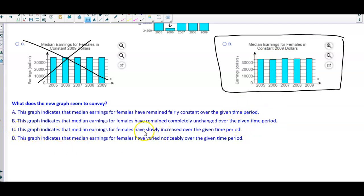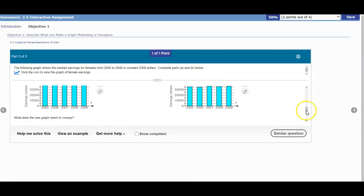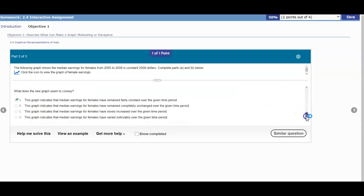This graph indicates that they have slowly increased over the given time period. Well, it hasn't increased because it started in 2005, had gone down, went up, gone down, and went up. And then D says that it varied noticeably over the given time period. Well, it's not varied noticeably because it looks like it's fairly constant. So our answer is going to be A. Therefore, A is going to be our answer.